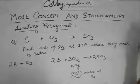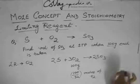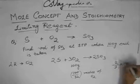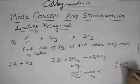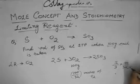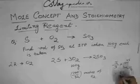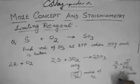Here, 3 moles of oxygen gives 2 moles of SO3. So these many moles of oxygen will give 2 by 3 into 100 by 32. This would come out to be 25 by 12 moles of SO3.